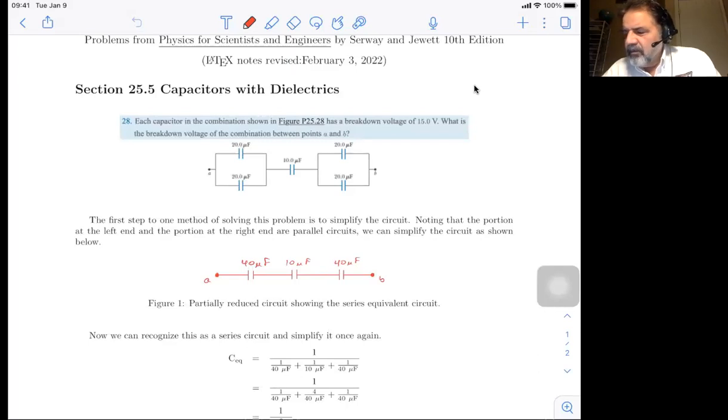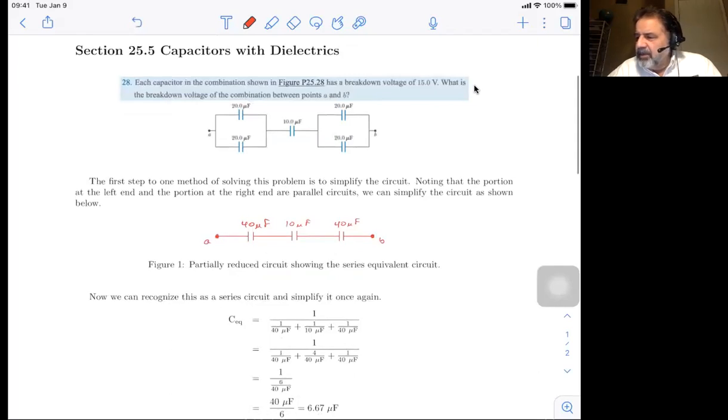My method of doing it was to simplify it. But before we even do that, if we simplify it and look at this simplified version, we can look and see that this is a parallel combination and this is a parallel combination. So the 20 and 20 combine to 40 microfarads and the same with the one by B. It combines to 40 microfarads and it gives you this series circuit here. And so that's the one we're going to look at.